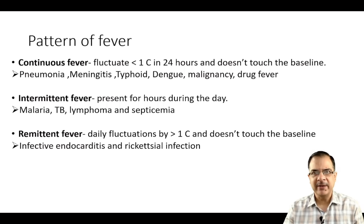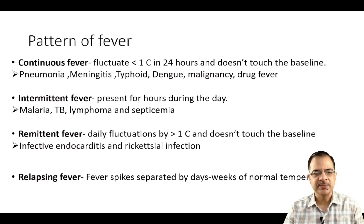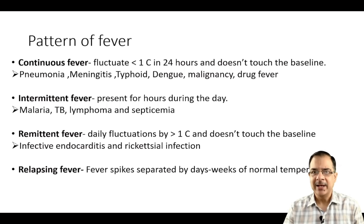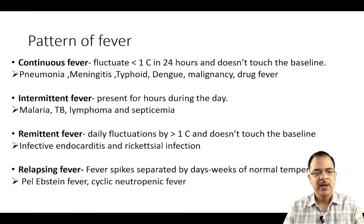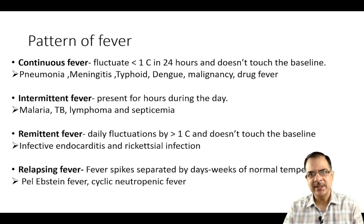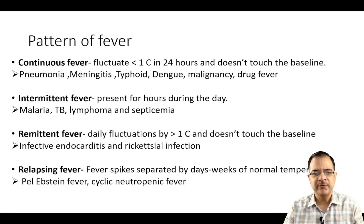Important causes of remittent fever include infective endocarditis and rickettsial infections. Relapsing fever means fever spikes are separated by a period of days to two weeks — for example, Pel-Ebstein fever: fever for 3 to 10 days, then an afebrile period of 3 to 10 days. This pattern is seen in Hodgkin's lymphoma or cyclic neutropenic fever, where fever recurs every 21-day cycle.